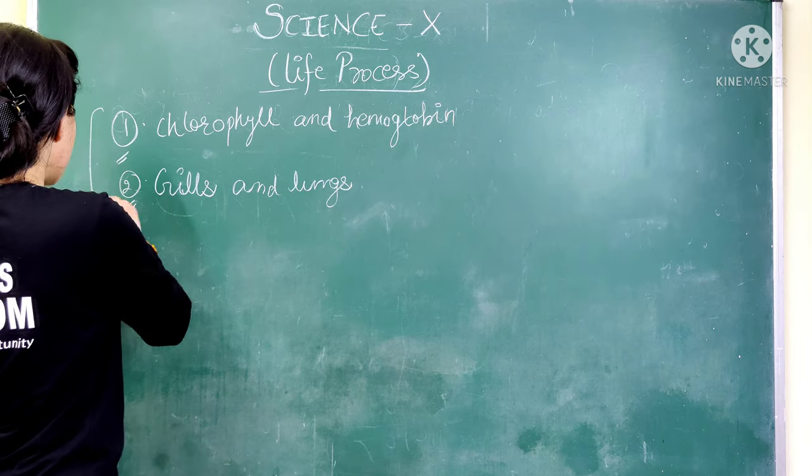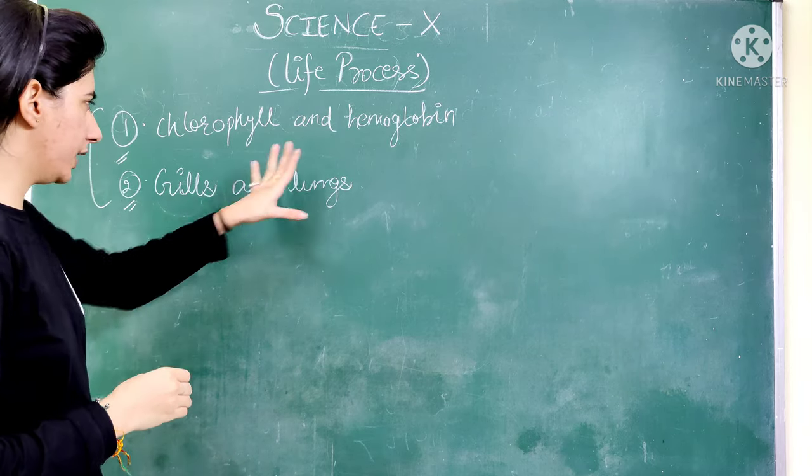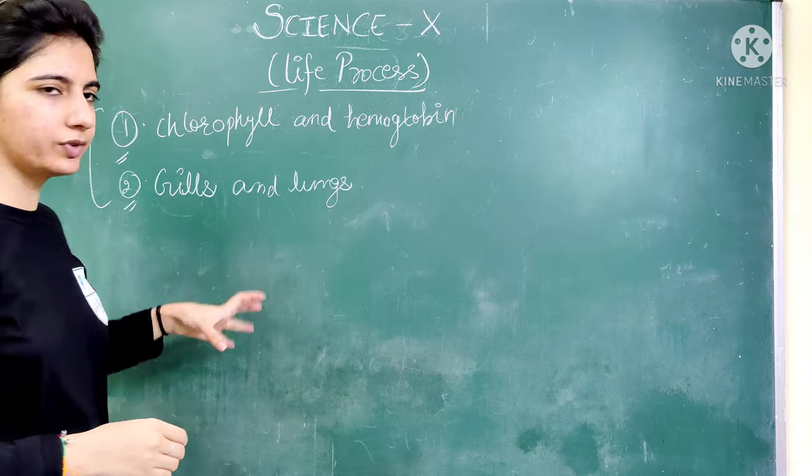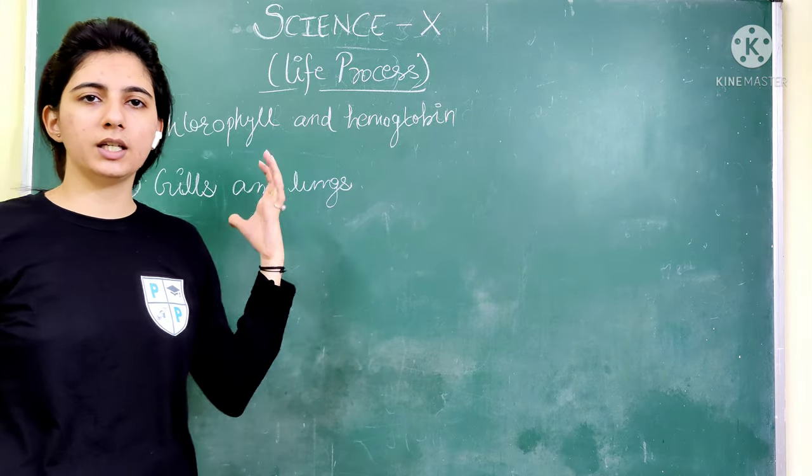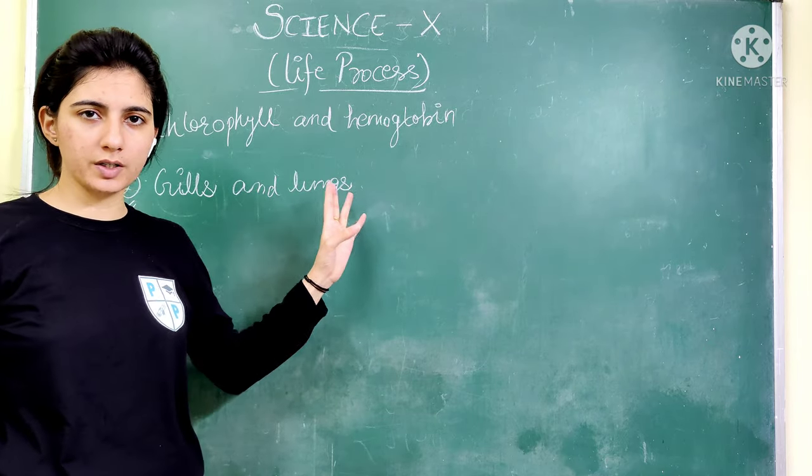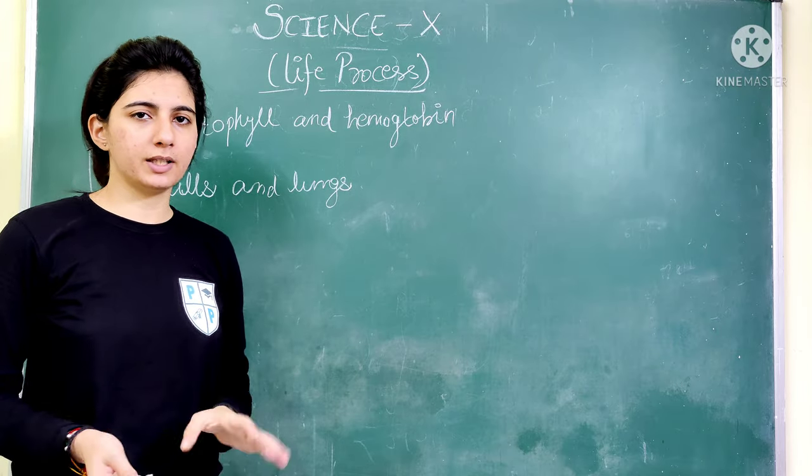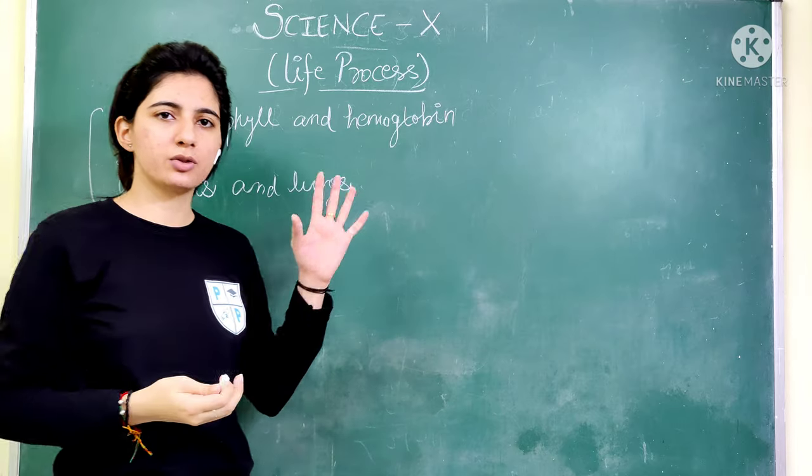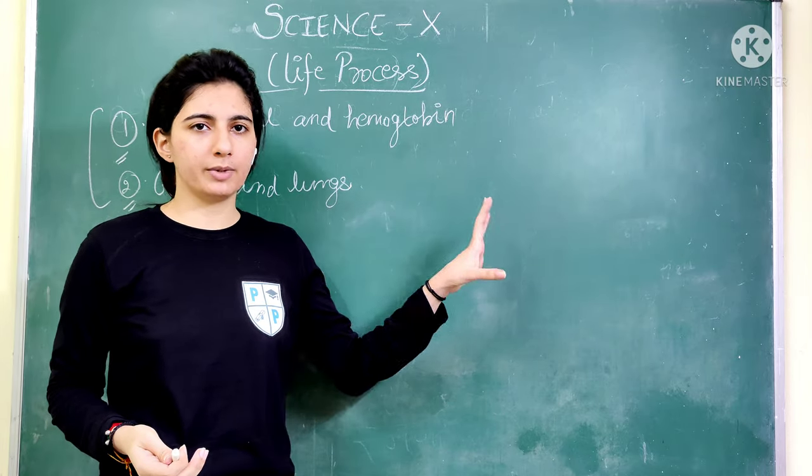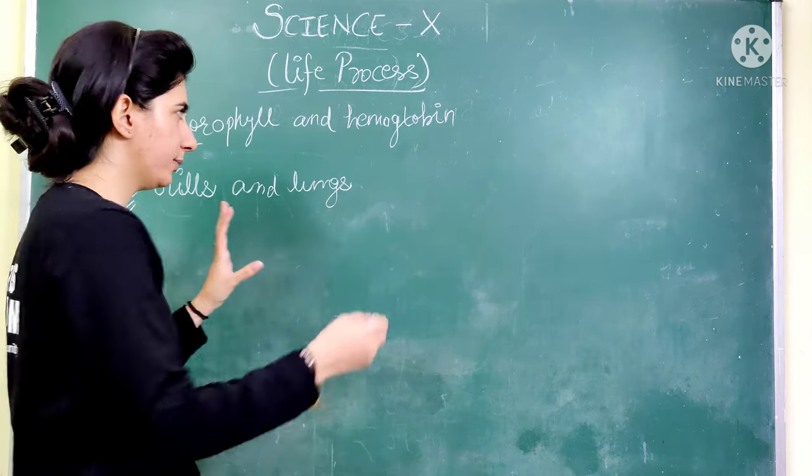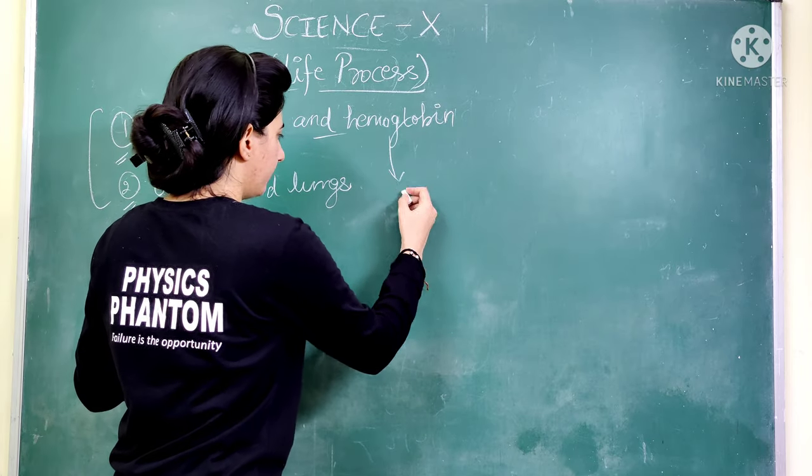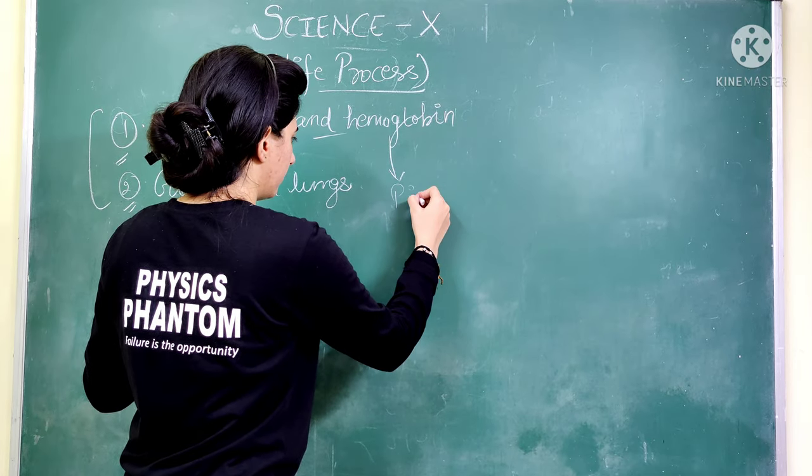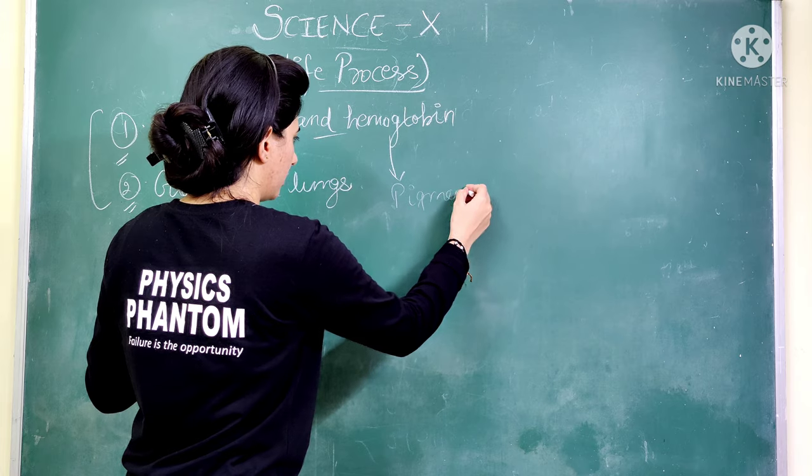First question is, as you can see on board: chlorophyll and hemoglobin, gills and lungs. I have written some words. This question asks you to find similarities between these four words. So the first point is, what are similarities between chlorophyll and hemoglobin? First of all, both are pigments.